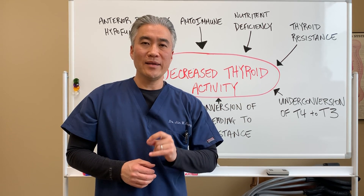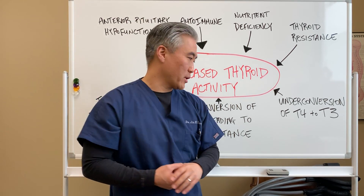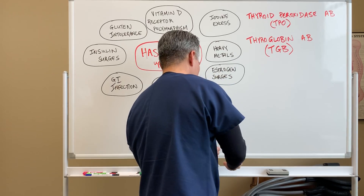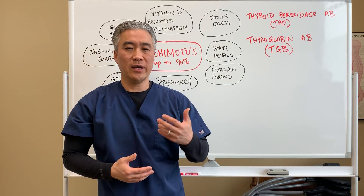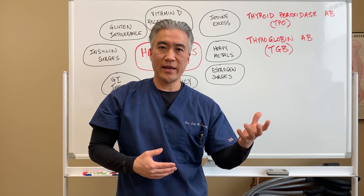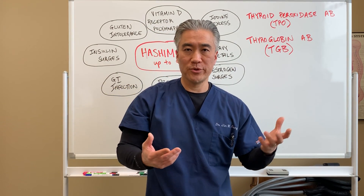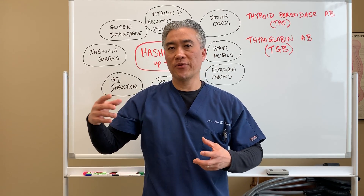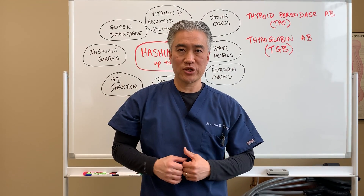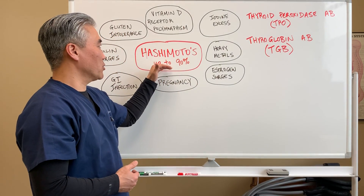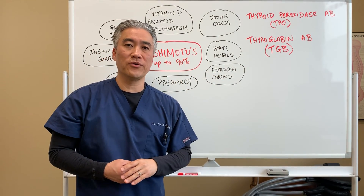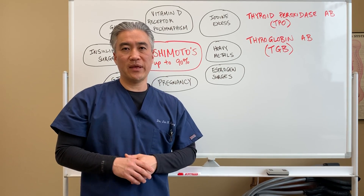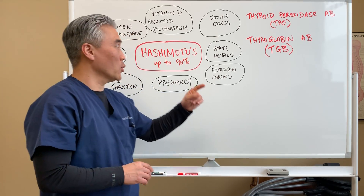So let's review in detail what Hashimoto's thyroiditis is. Basically, with Hashimoto's thyroiditis, you may have a phenotypic or genetic predisposition for autoimmune disease, and you have issues with stress and other factors that make this genetic expression occur. It's up to 90% of people who have under-functioning thyroid. So the number one cause is Hashimoto's thyroiditis, yet we never check to see if they have it.